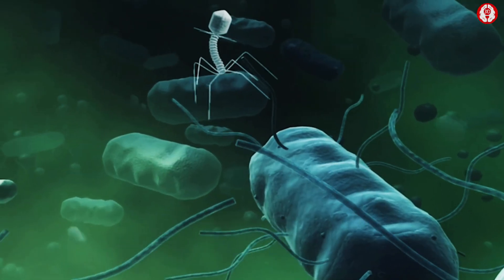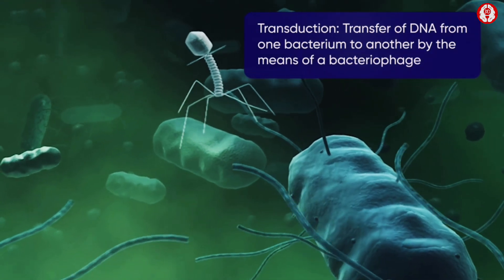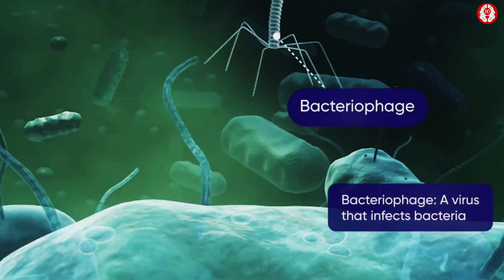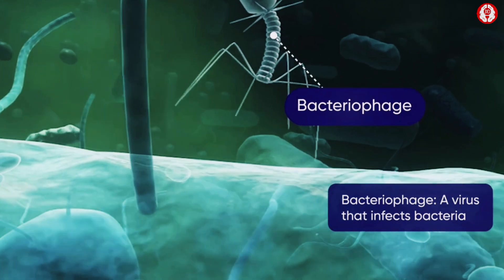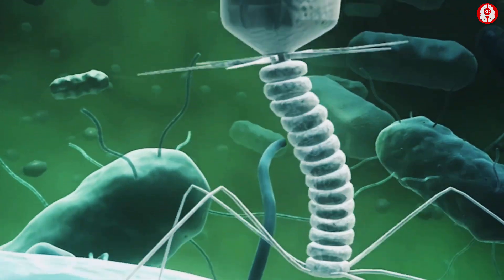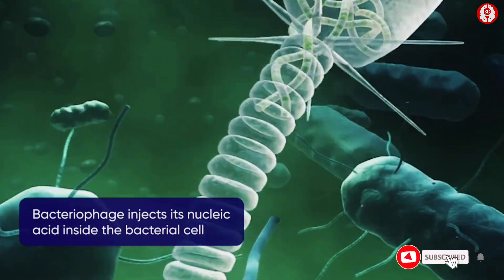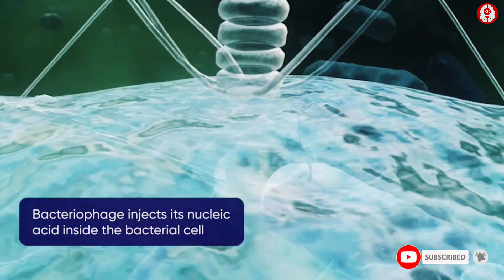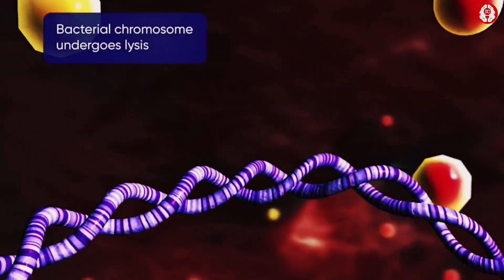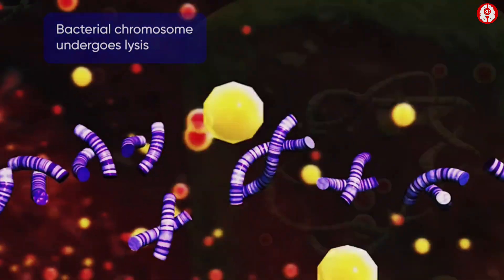A method of genetic transfer and recombination is transduction. Here, a bacteriophage — a virus that infects bacteria — attaches to the cell wall of a bacterium and injects its DNA into the cell. The bacterial chromosome is broken down.